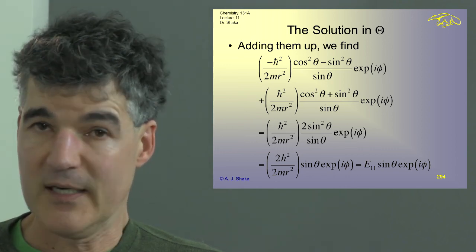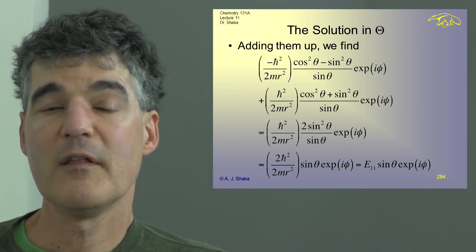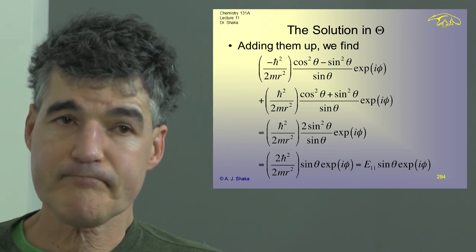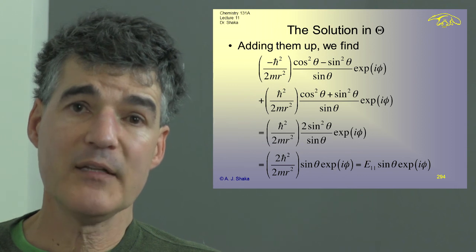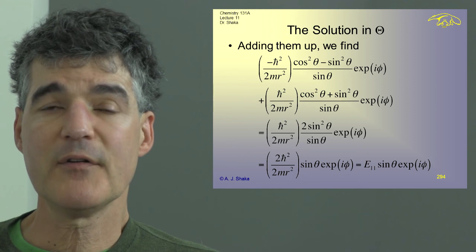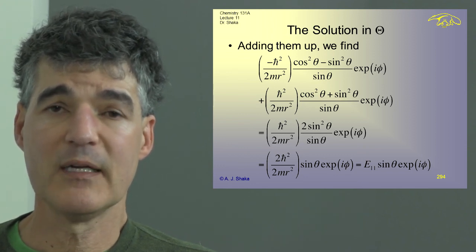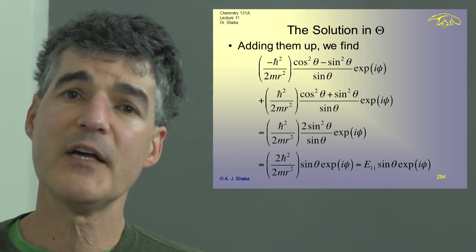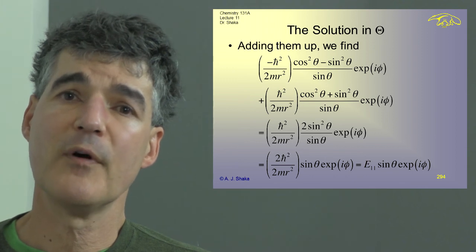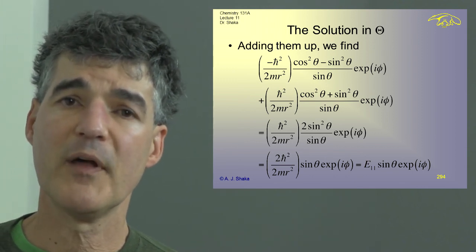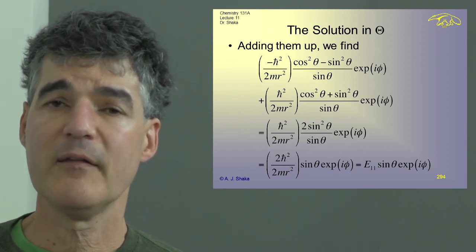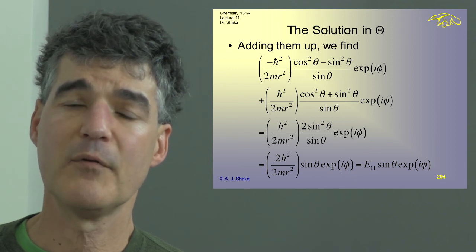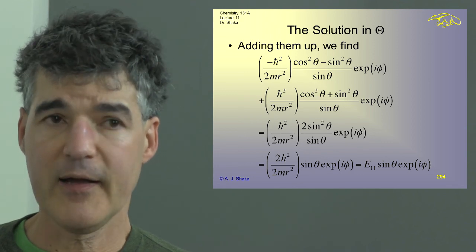That means the energy has to be that constant: 2 H-bar squared over 2MR squared. Interestingly, that's the same energy as we got when we used cosine theta. So it seems like the power in theta has something to do with the eigenvalue for the energy, and that's in fact going to be true. We have the exact same energy, and so this system has degeneracy. Recall that degeneracy is often related to symmetry — when we had the particle in a box, we had degeneracy when the two dimensions had the same size.